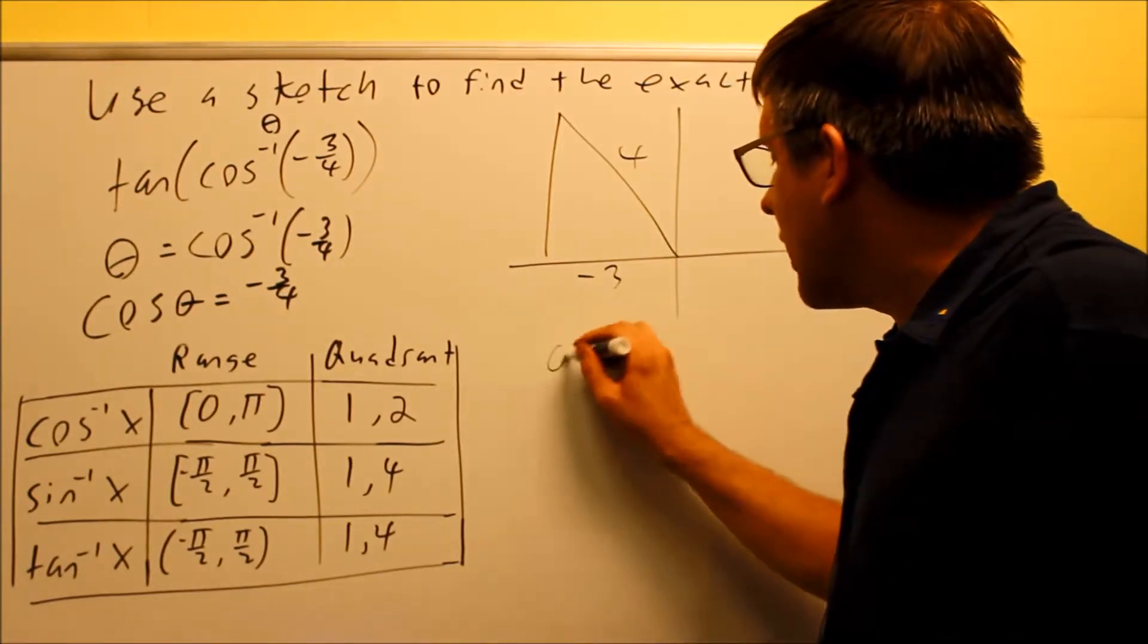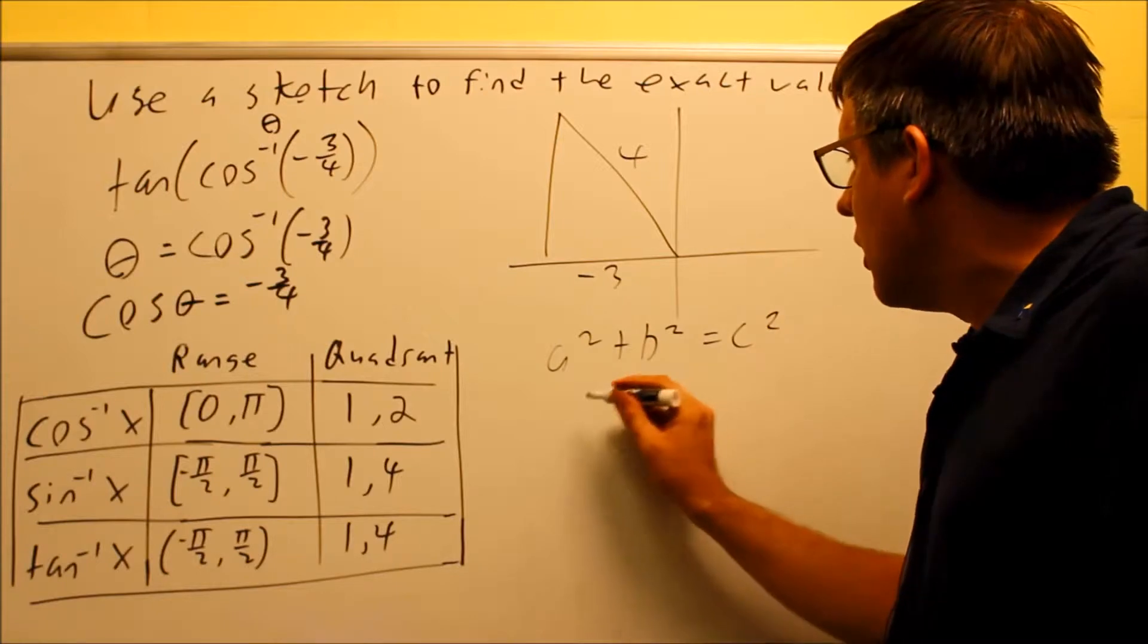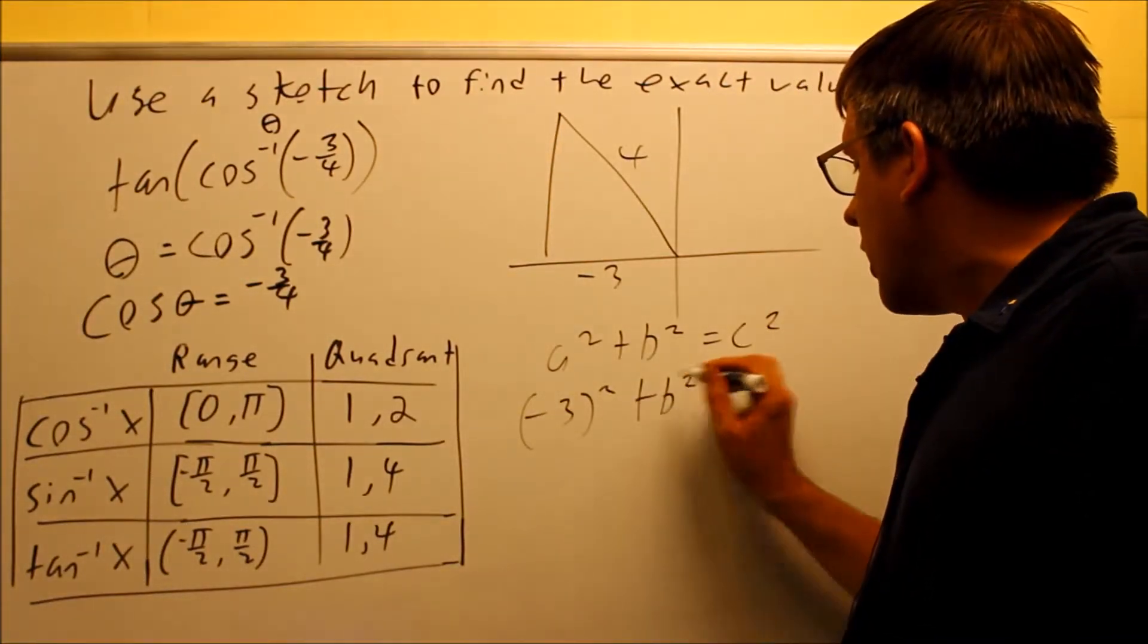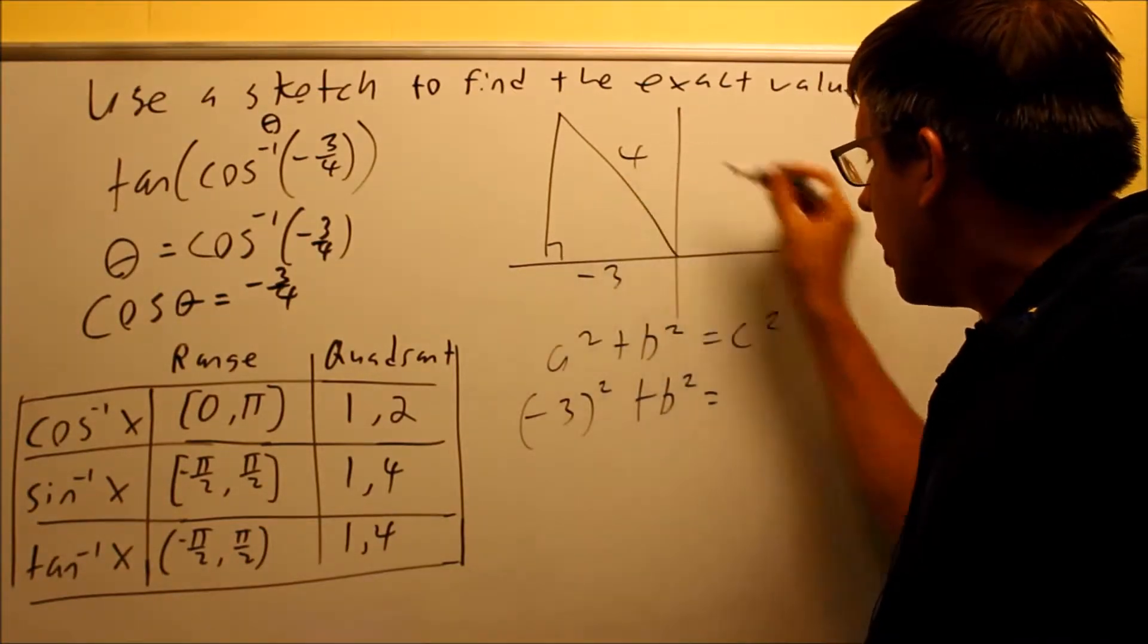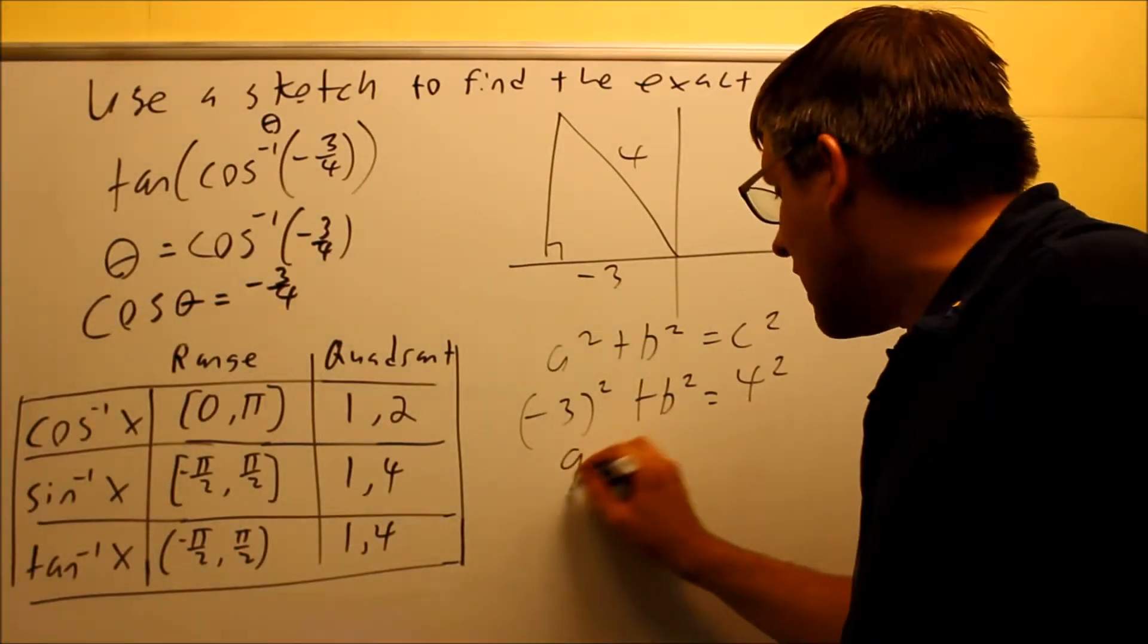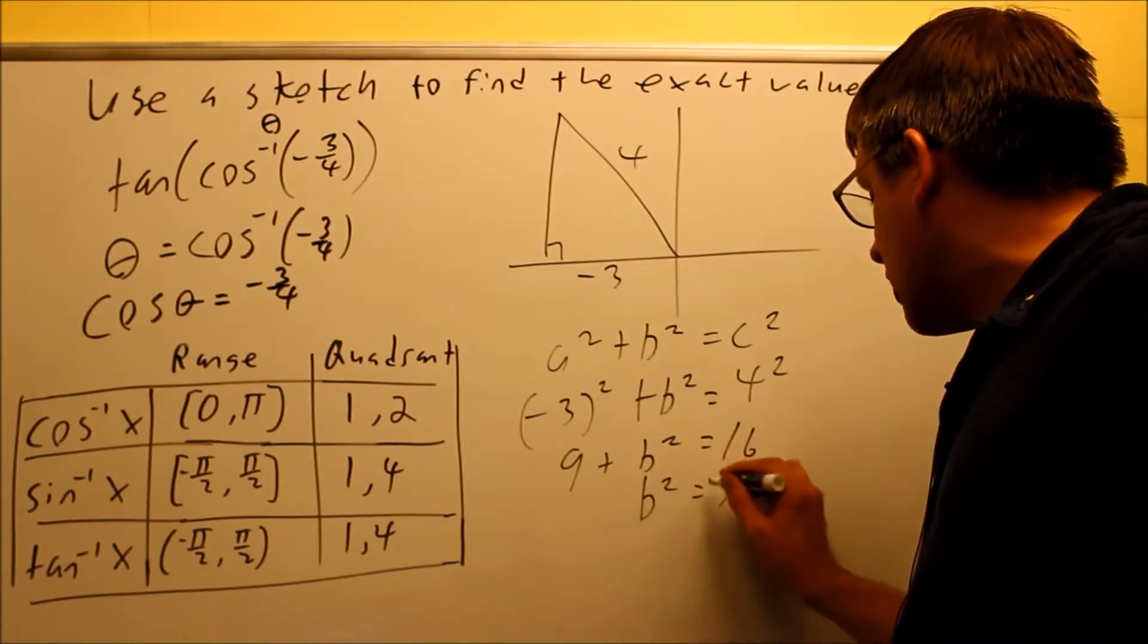We have to do this one again by Pythagorean theorem. So a squared plus b squared equals c squared. I have negative three. I have b squared is unknown. This c, that's the side opposite the right angle here, and that's going to be four. So I put that in there for c. I get nine plus b squared equals 16. b squared equals seven.